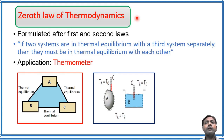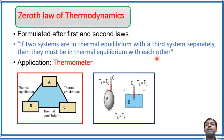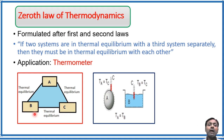We will now move on to the zeroth law of thermodynamics. This zeroth law was formulated after the first and second laws of thermodynamics. The statement is: if two systems are in thermal equilibrium with a third system separately, then they must be in thermal equilibrium with each other. This is illustrated in a diagram where object A is in thermal equilibrium with B and also with C, and therefore B and C are also in thermal equilibrium with each other.